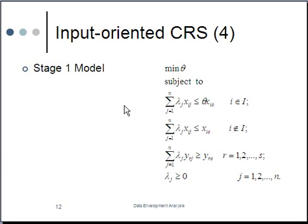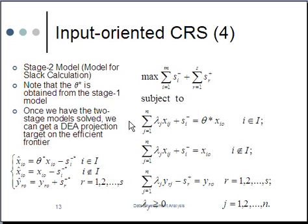Again, this model is solved in two stages as the regular input-oriented CRS model. First, you solve this model for the efficiency, for the theta, but again, we don't include the theta on those inputs that are not controllable. That's the first stage. And then second stage is you fix the efficiency and then you calculate the slacks. This model is very similar to the slack model that we talked about in the envelopment models. The only difference is where you put the theta. And based upon the optimal solutions from the two stages, you can get a projection on the frontier. So the projection basically says, what if you want a particular inefficient DMU to be efficient? What would be the new levels of the inputs and the outputs? That's the projection.